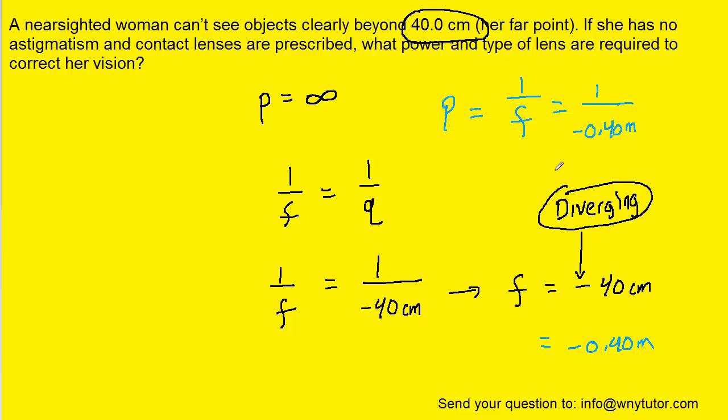And when we compute that, we should get negative 2.5. And then the standard unit for power is diopters. So this would be the correct answer to the second part of the question.